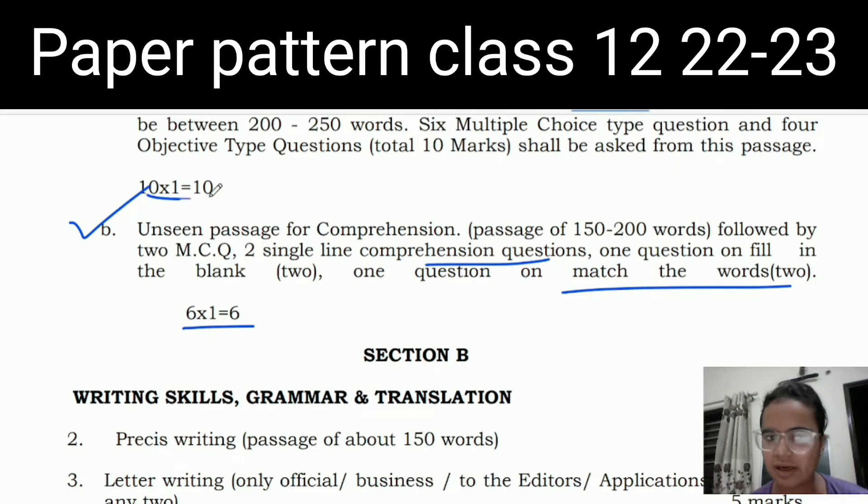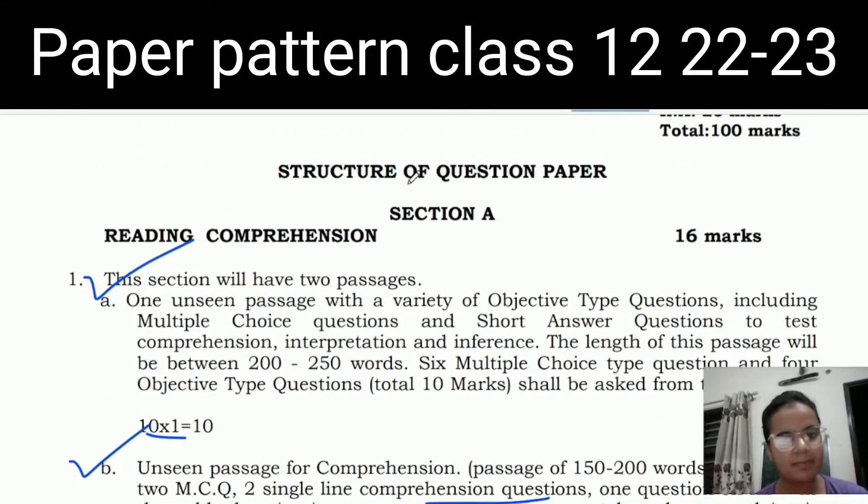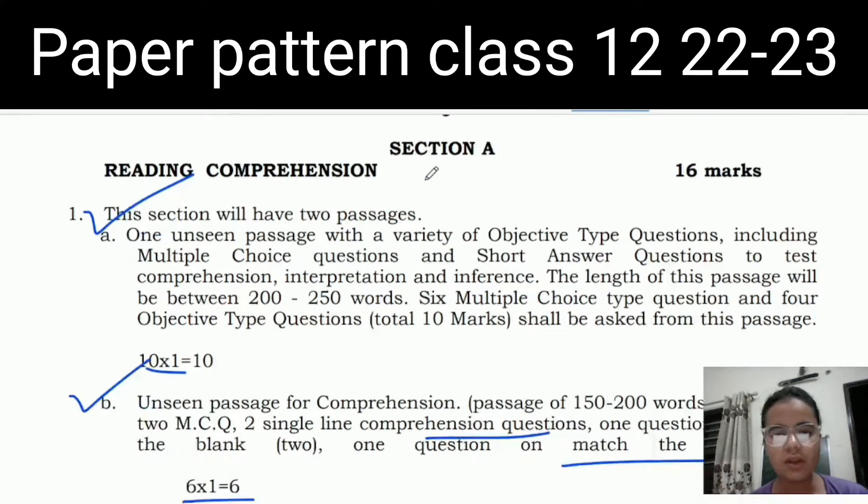The second comprehension will be an unseen passage in which there will be two MCQs, two single line comprehension questions, one question on fill in the blank, and one question on match the words. This will be for six marks, totaling ten marks for both comprehensions. We will prepare them all in the last because it will be very easy.